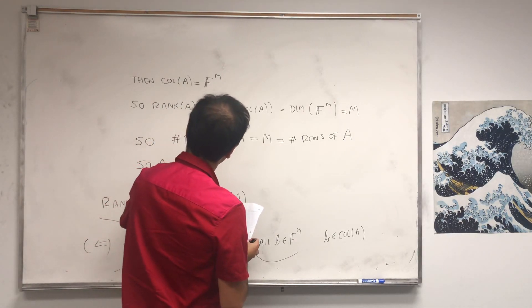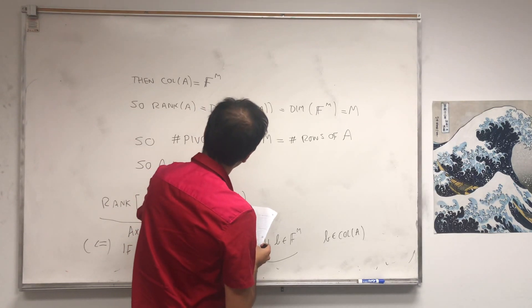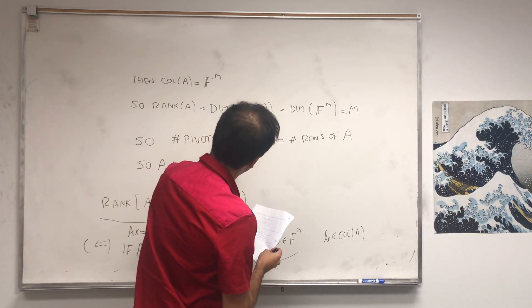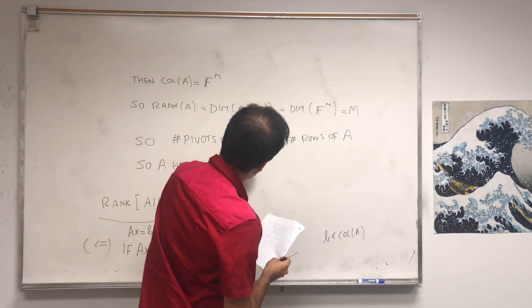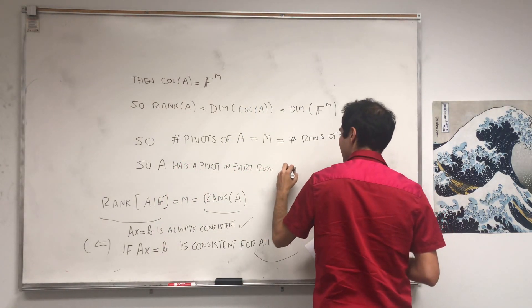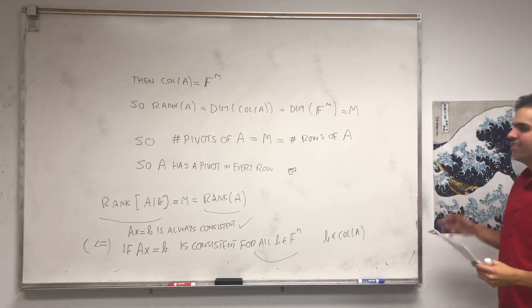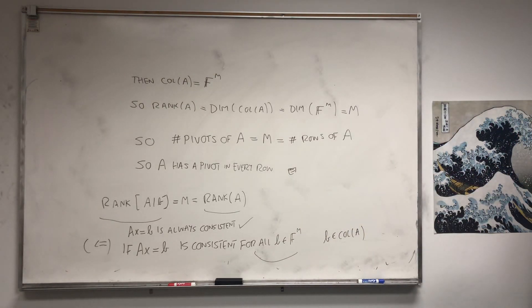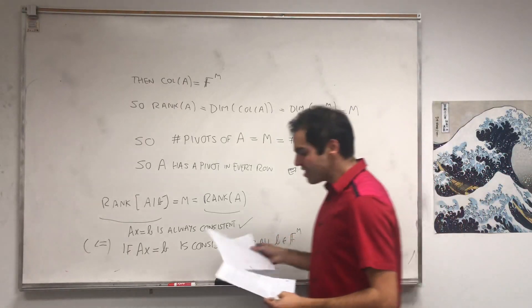So A has a pivot in every row. Alright, therefore, AX equals B always consistent is the same thing as A has a pivot in every row. That's one thing.